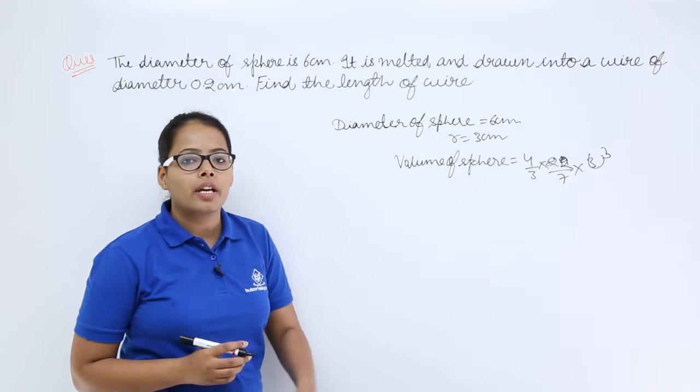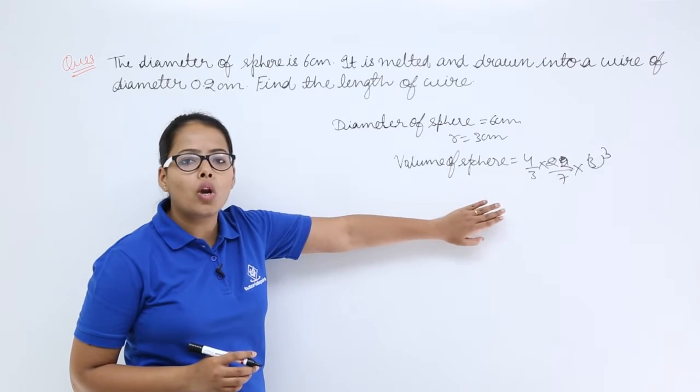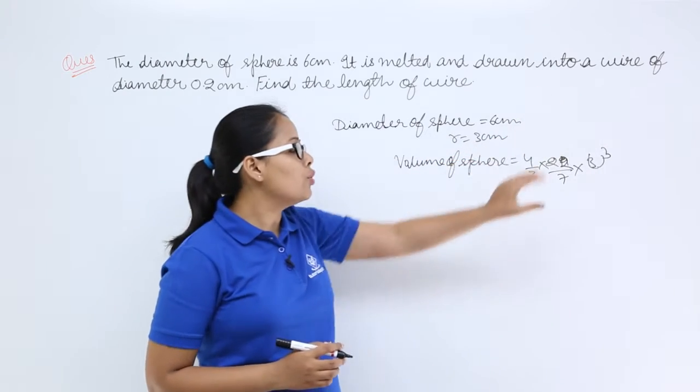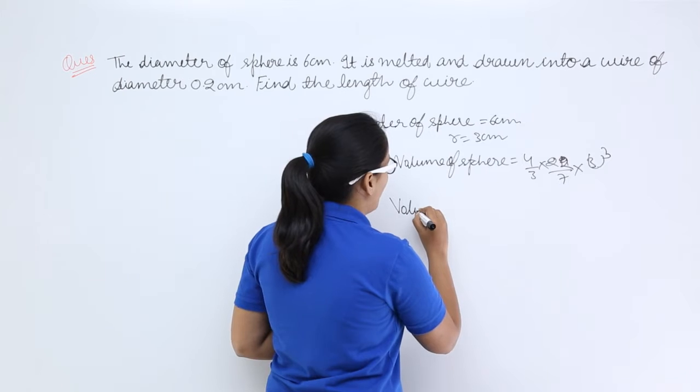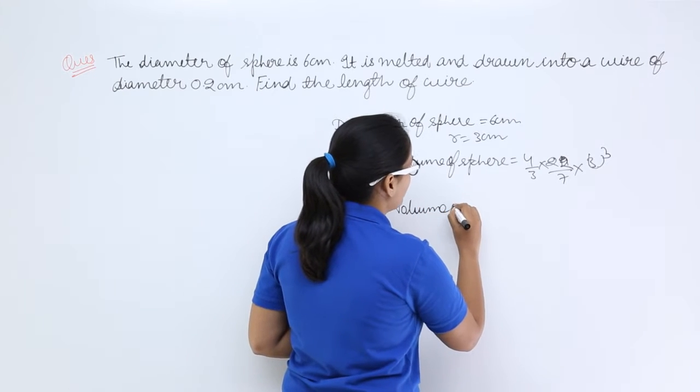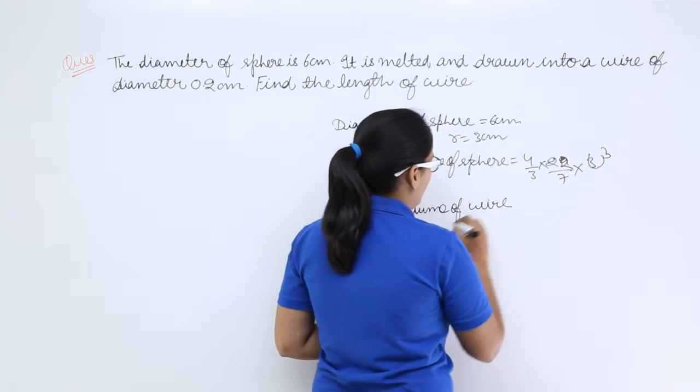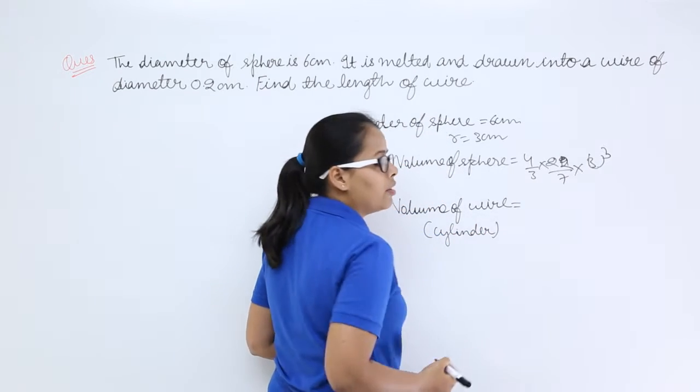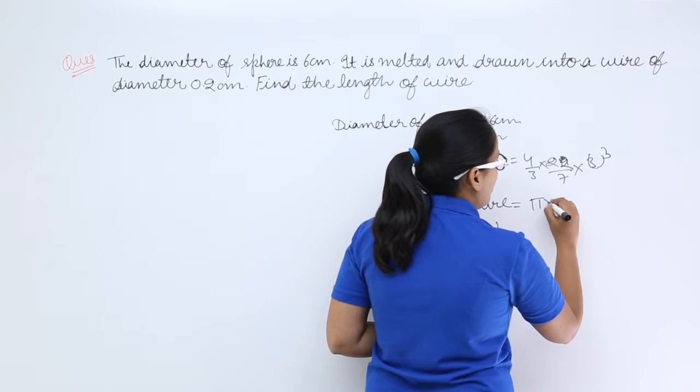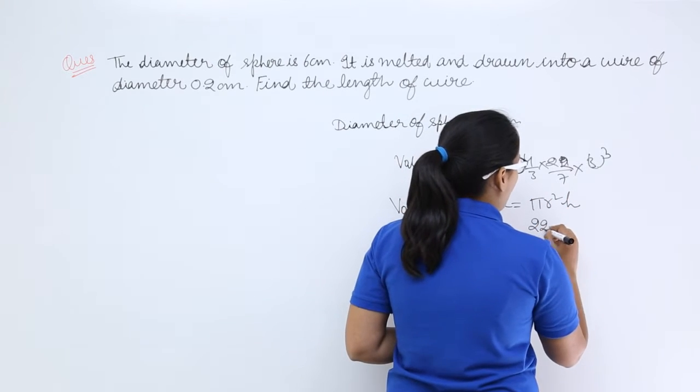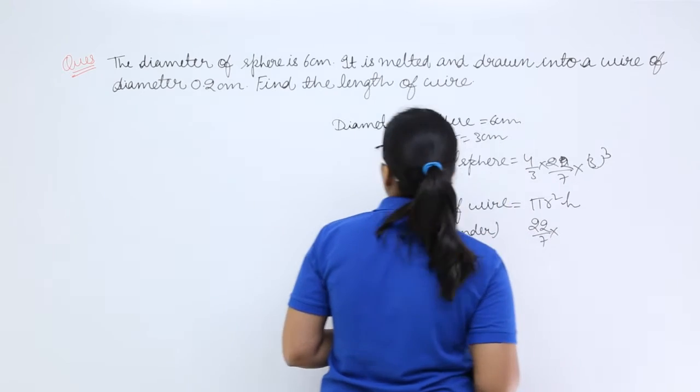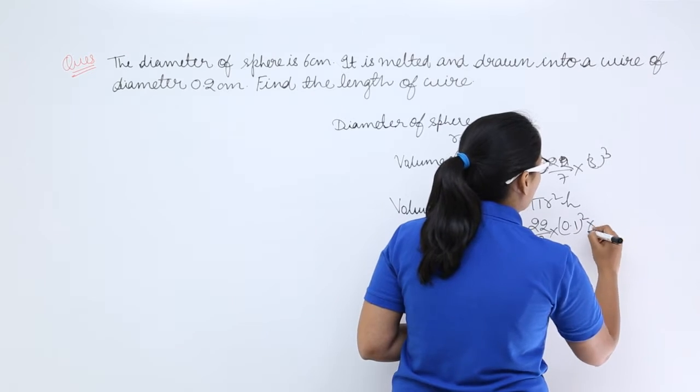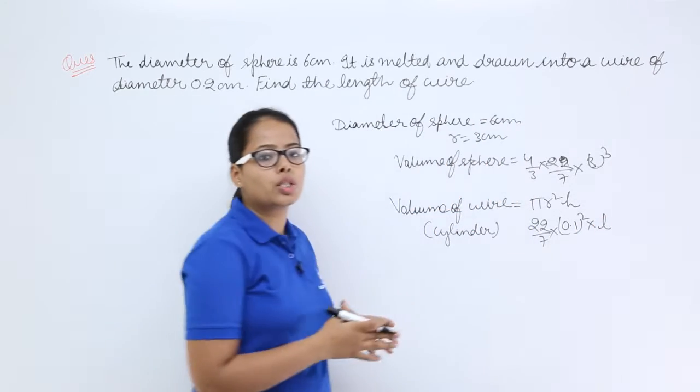This is the volume of the sphere and you know that this whole material is used to draw a wire out of this. So volume of this wire, and you know that this wire will be in the shape of cylinder, it will be π r² h. You can write π as 22/7. Here the diameter is 0.2 so radius will be 0.1, and you need to calculate the length of this wire.